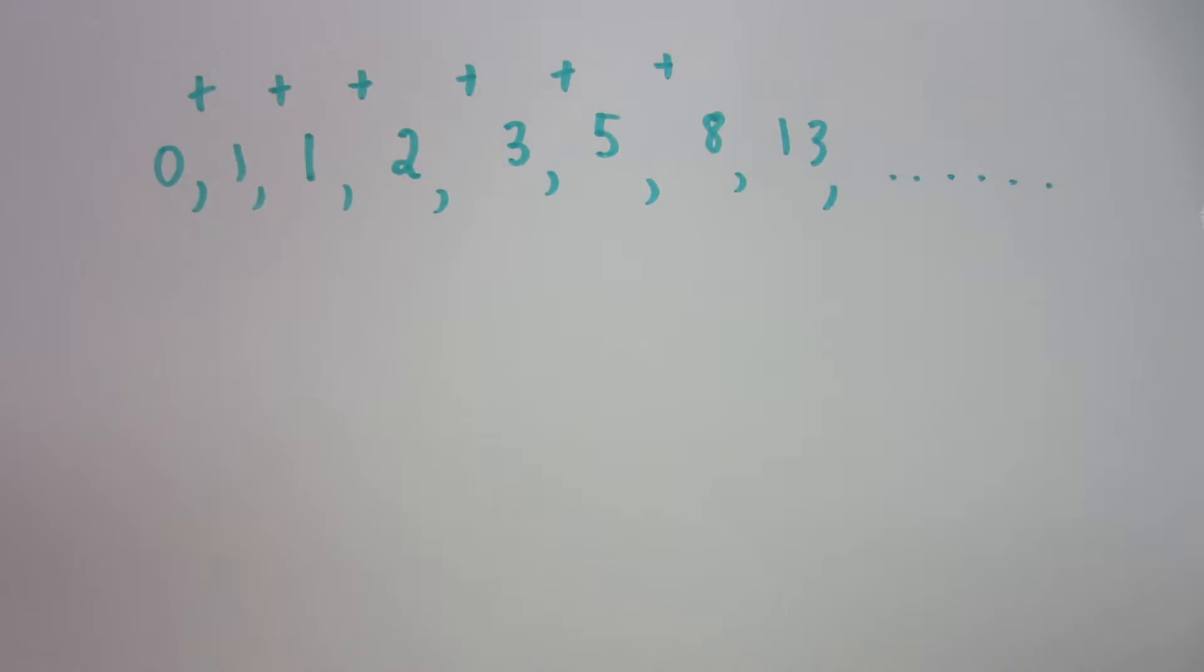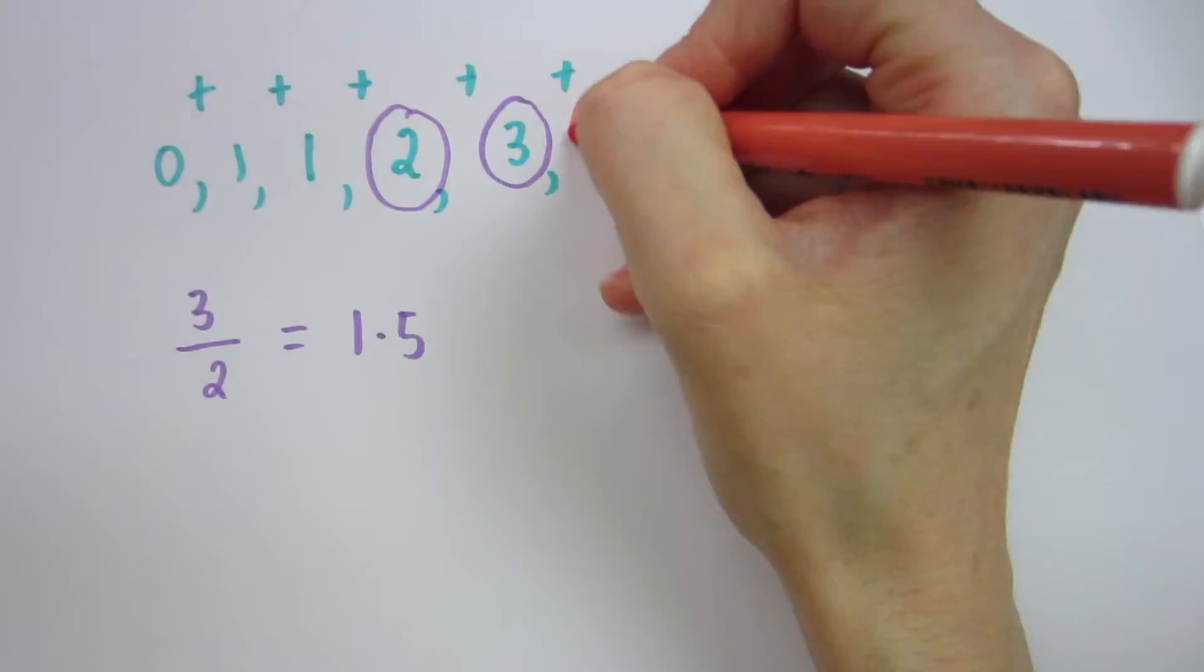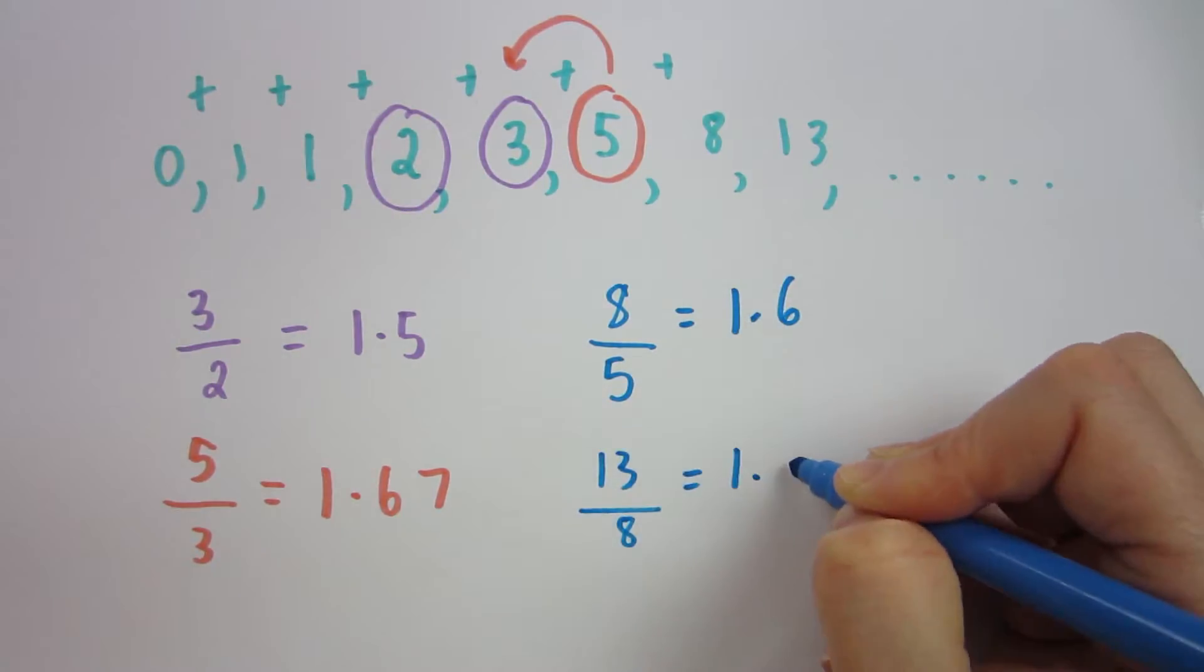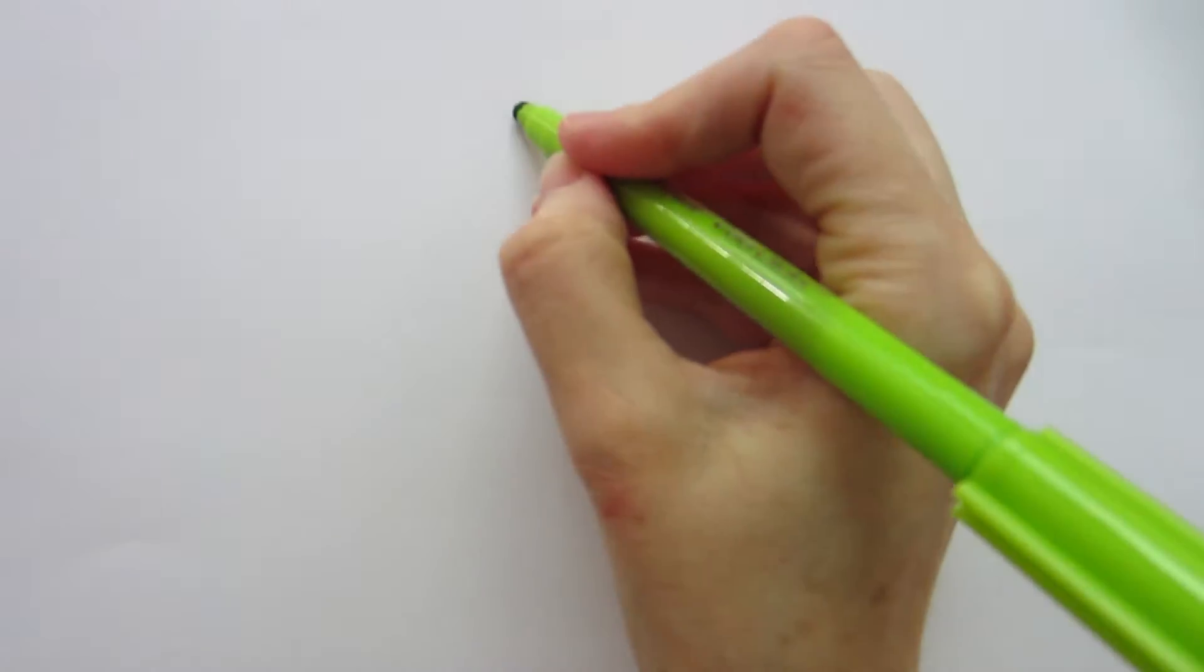When we place each of these numbers of the Fibonacci sequence over their previous number, we get closer and closer to the golden ratio itself, 1.618. So let's see how phi geometry works in terms of the logarithmic Fibonacci golden spiral.